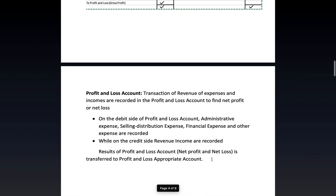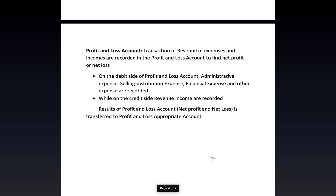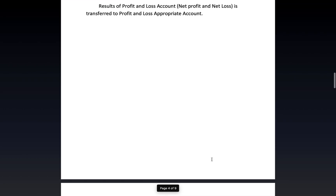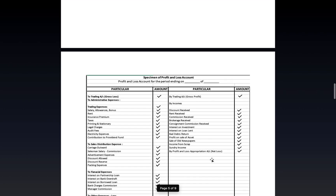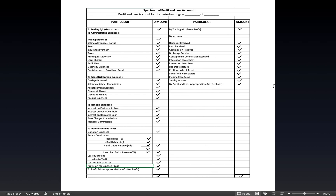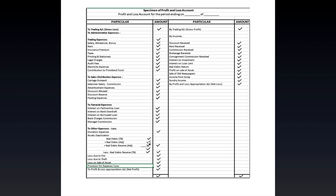Next is the profit and loss account, where transactions of revenue expenses and incomes are recorded to find net profit or net loss. We already practiced what comes on the debit and credit sides in 11th standard. The specimen provided here shows which entries are going to come — don't forget those formulas before we start.